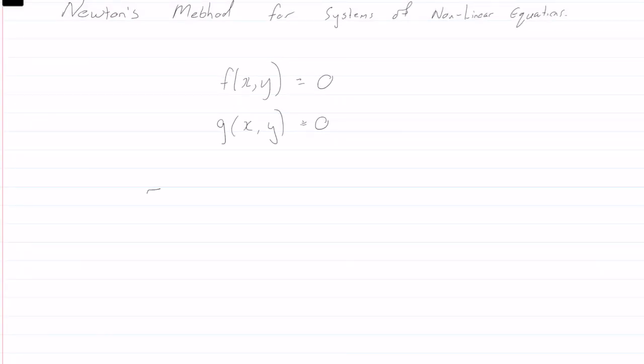Newton's method says the following. So x_i plus 1, y_i plus 1, is equal to x_i, y_i, minus the Jacobian, or the inverse of the Jacobian, x_i y_i,